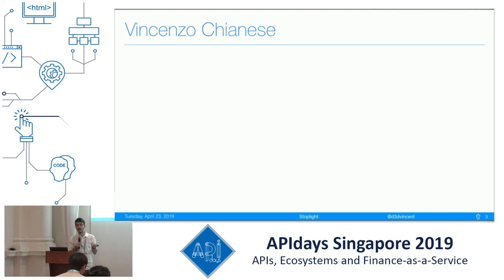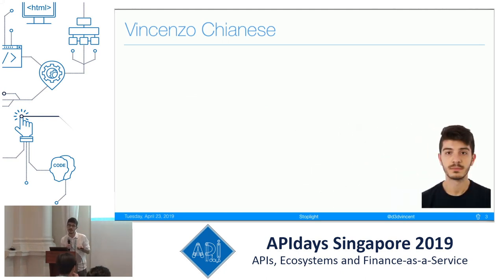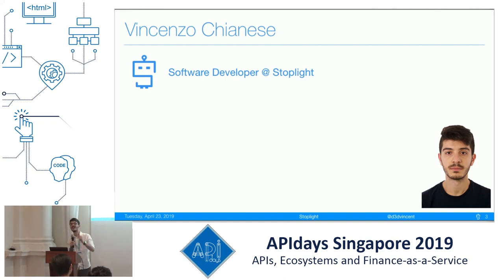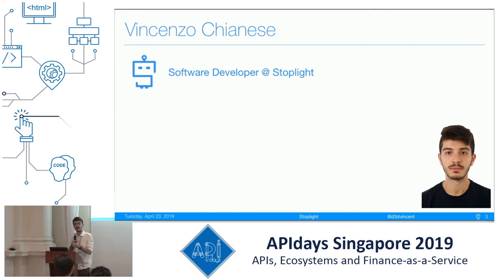My name is Vincenzo Giannese. I am an Italian software developer, but I've been living away from the country for the last five years — Czech Republic first, and then Spain, which is where I'm living now. I am a software developer at Stoplight. Stoplight builds tools for API developers — from having an idea to getting an API done — offering you the tools to make it happen in terms of testing, documentation, and so on.